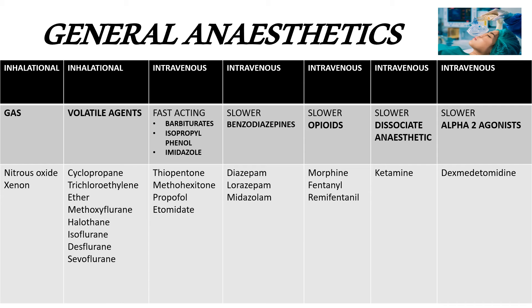The next group is dissociative anesthetics, the example being ketamine. Ketamine is a phencyclidine derivative that causes dissociative anesthesia — the dissociation is between the thalamus and cortex, called thalamocortical dissociation. Initially it releases catecholamines, giving it sympathomimetic activity, making it more cardiovascularly stable than propofol or etomidate. However, the downside is it may increase heart rate and blood pressure, and when intrinsic catecholamine stores are exhausted, it may have a cardiac inhibitory effect.